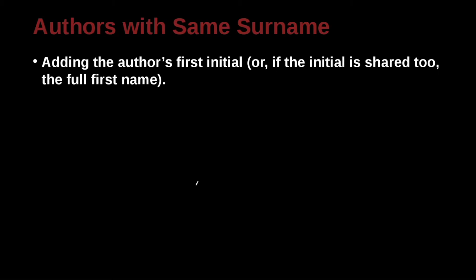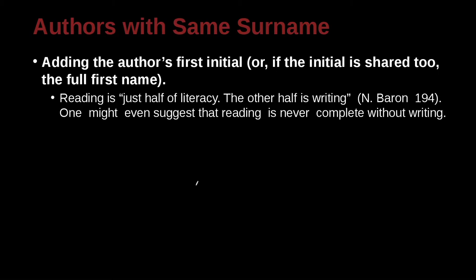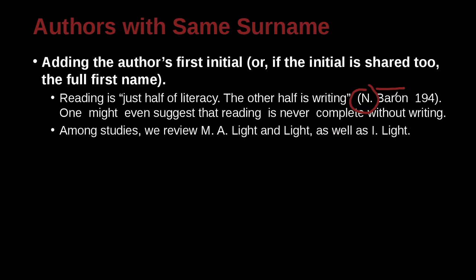What about the special case where you have authors that have the same name? Here in this example: 'Reading is just half of literacy. The other half is writing.' — N. Barron, 94. Why do we have the 'N' here? Because somewhere in our paper, we have another author whose name is also Barron. So we put the 'N' here to separate this Barron from the other Barron.